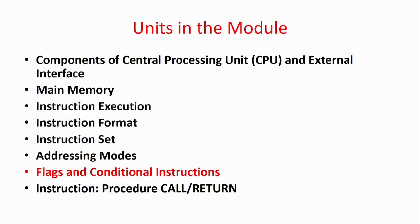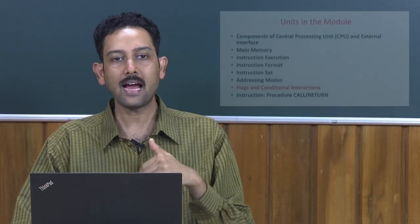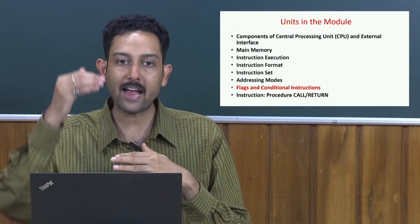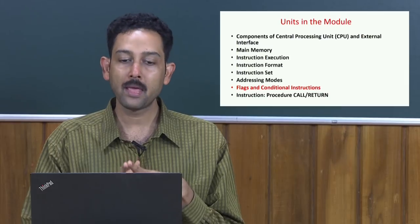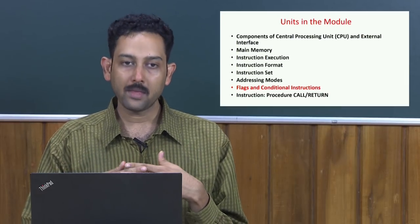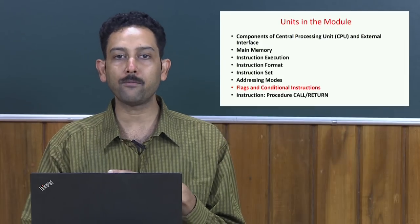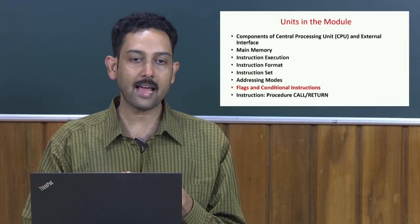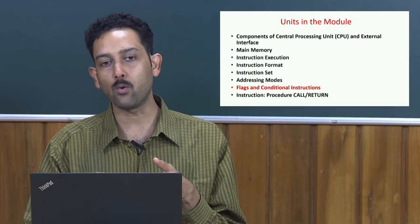That is, the first instruction may load something from memory, then it may do some addition operation, subtraction operation, and then it will again write to the memory. We were assuming that everything would go in a very sequential flow, but as all of us have written some C code or any high-level language code, it is very obvious that there is nothing which is very sequential in a code.